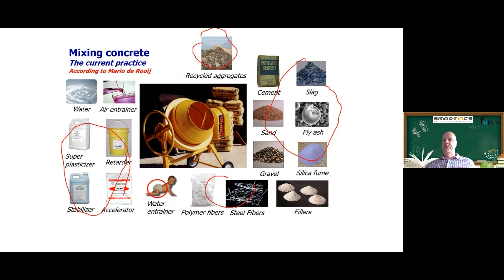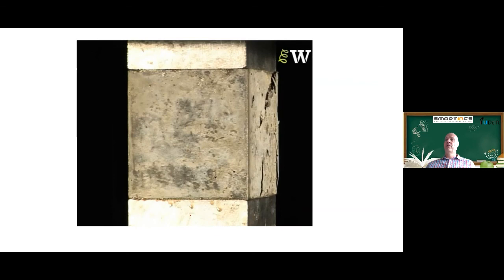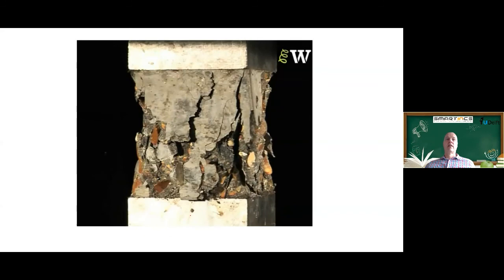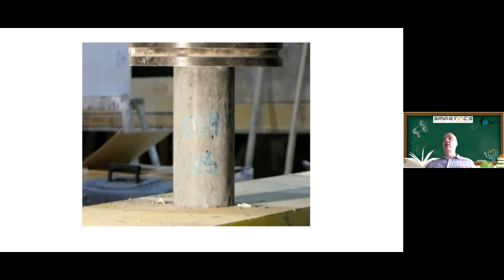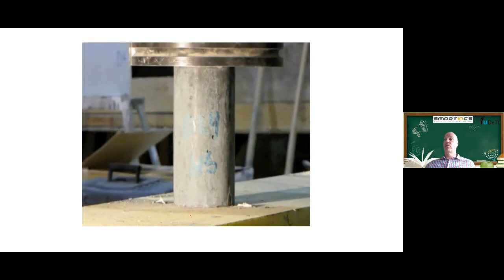When we test the concrete, we can take a cube and load it until it breaks. The maximum load measured is the compressive strength. Normal concrete fails relatively slowly when compressed. A higher strength concrete, tested as a cylinder, fails more explosively — a more sudden, violent failure of the material.